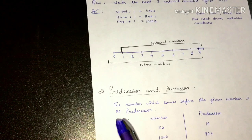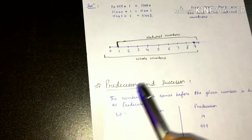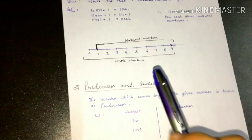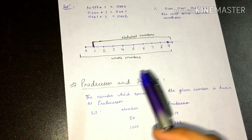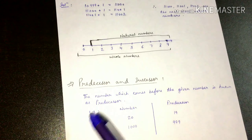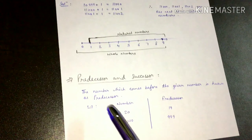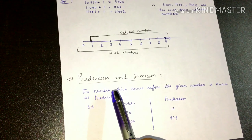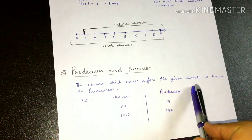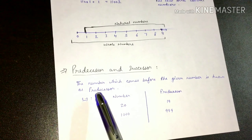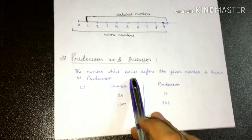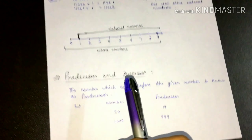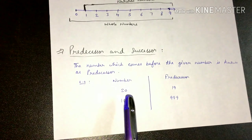Let's proceed. So one other thing is predecessor and successor. Predecessor — which numbers are predecessors? The number which comes before the given number is known as the predecessor.